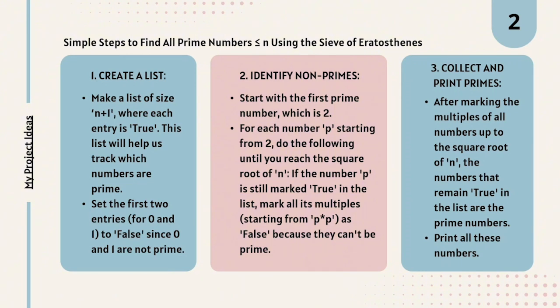If we are thinking about 4, 4 is not a prime number because it has three factors: 1, 2 and 4. So you have to identify the non-primes. Then collect and print the primes. After identifying all the non-primes, the numbers which are left, those are the prime numbers. So you have to print all those numbers. Got it? Got the algorithm?